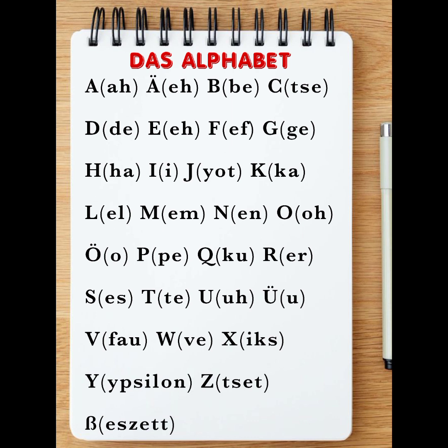There is this letter which almost looks like a capital B — it is not a capital B. The name is Eszett. It is normally pronounced the same way you pronounce a double S in German.